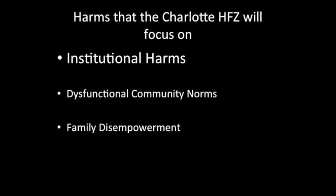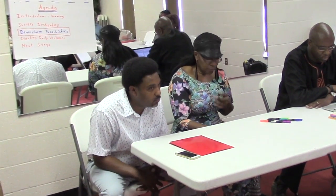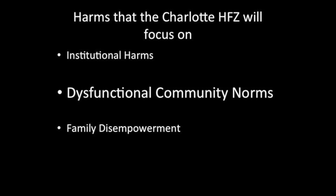Whether it's institutional harm being done by the police, by the judicial system, or other institutions — those are one component of social harms faced in the neighborhood. Another component that leads to crime, violence, and disagreements in the neighborhood is community norms.